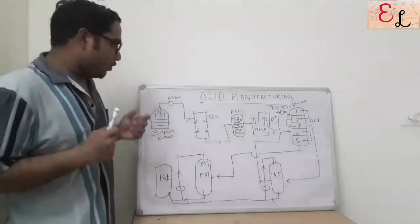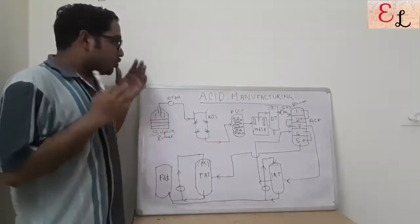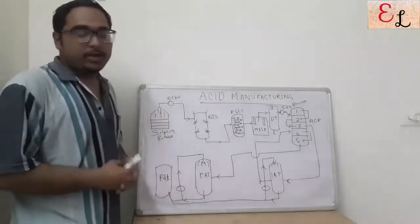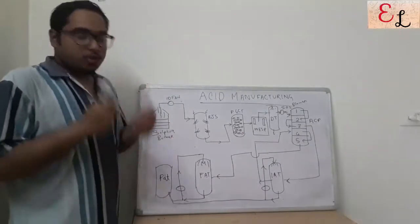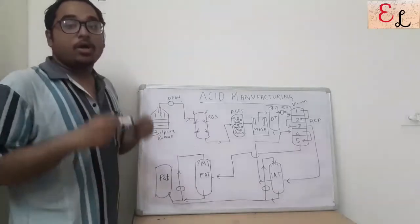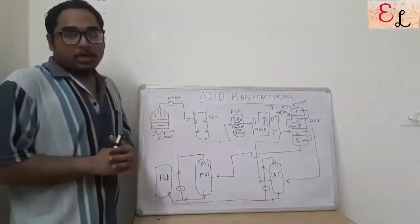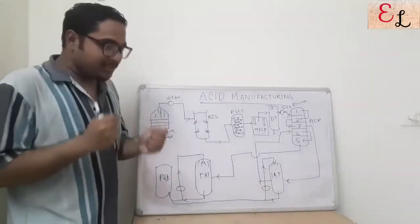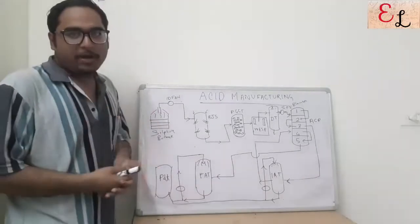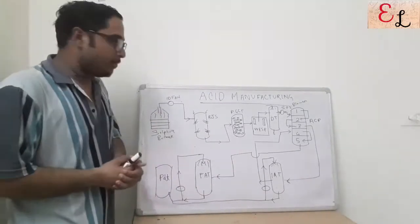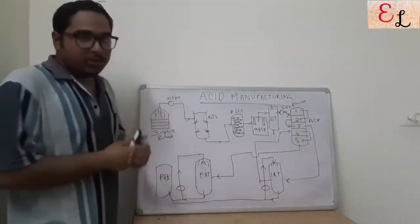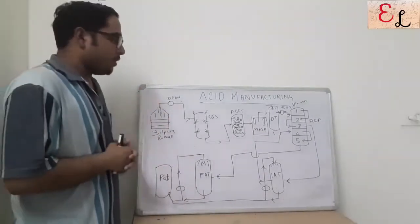Hello everyone, welcome to today's video. Today we are going to study about a plant. The plant that I currently work in is an acid manufacturing unit, so today we are going to study about sulfuric acid manufacturing through the contact process. We will also have discussions about other plants like alcohol manufacturing or detergent manufacturing plant, but let's start with the acid manufacturing plant.